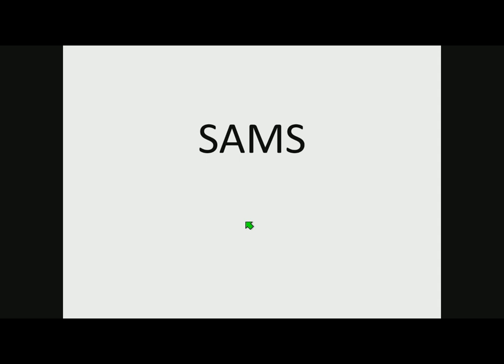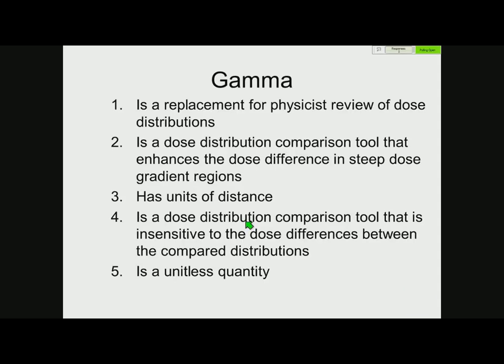Audience response questions: Is gamma a replacement for physics review of dose distributions? Is it a dose distribution comparison tool that enhances the dose difference in steep dose gradient regions? Does gamma have units of distance? Is gamma a dose distribution comparison tool that is insensitive to dose differences between compared distributions? Gamma is a unitless quantity.